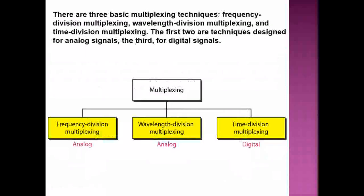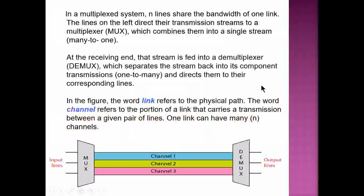There are three basic multiplexing techniques: frequency division multiplexing (FDM), wave division multiplexing (WDM), and time division multiplexing (TDM). The first two — FDM and WDM — are techniques designed for analog signals, while TDM is a technique designed for digital signals.